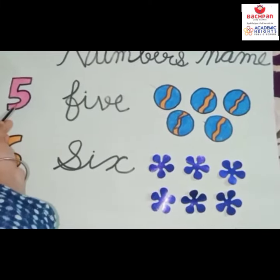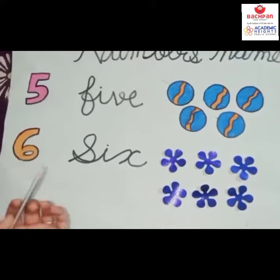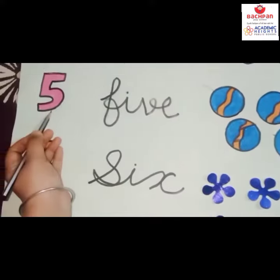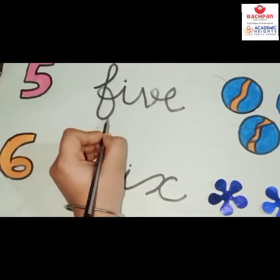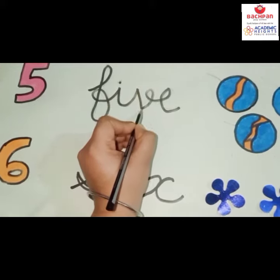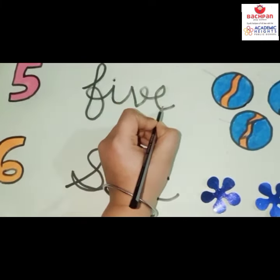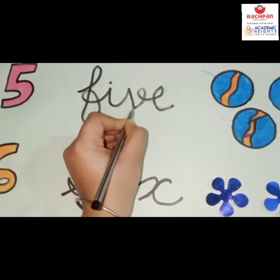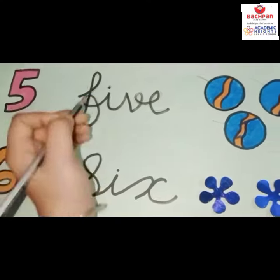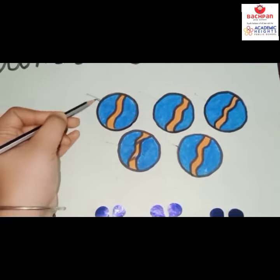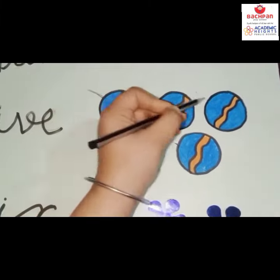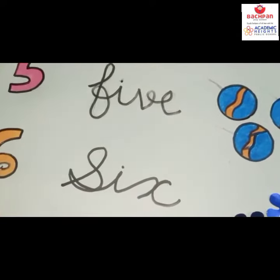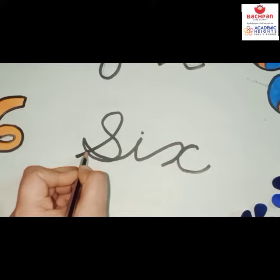See here — which number is this? 5. It is spelled F-I-V-E, 5. How many balls are here? 1, 2, 3, 4, and 5. Now, number 6. It is spelled S-I-X, 6.